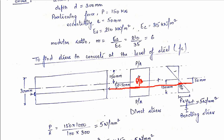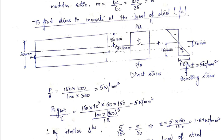The bending stress at the bottom-most fiber is P·e·Y_bottom / I. First, computing P/A: P = 150 × 1000 N, area = 100 × 300 mm², giving a direct stress of 5 N/mm².